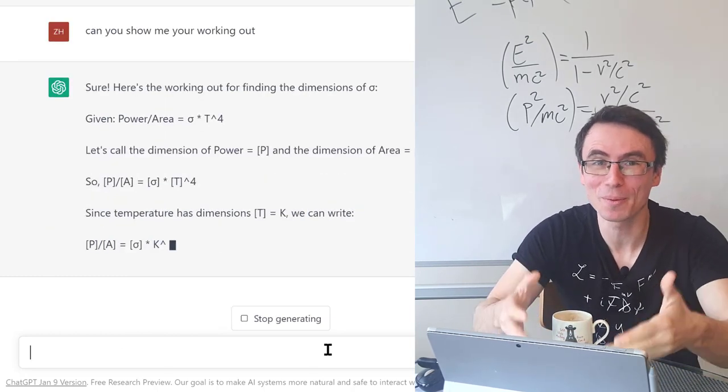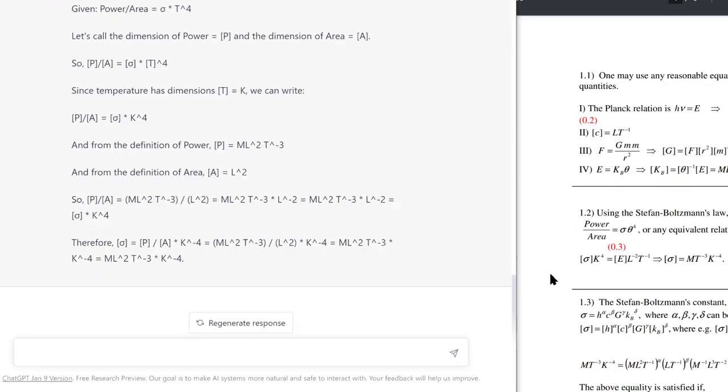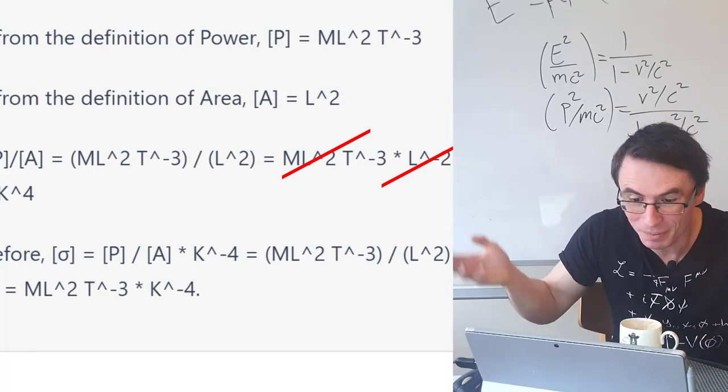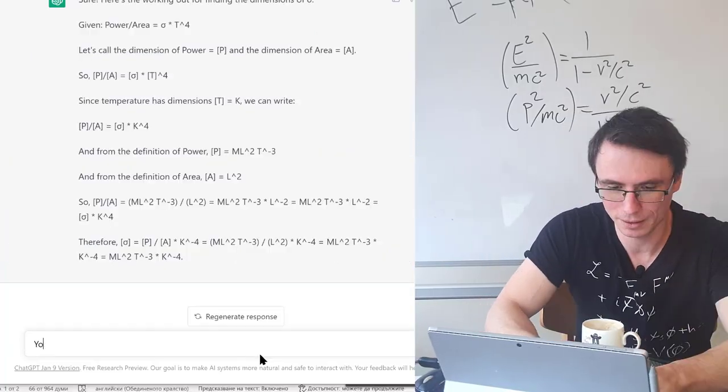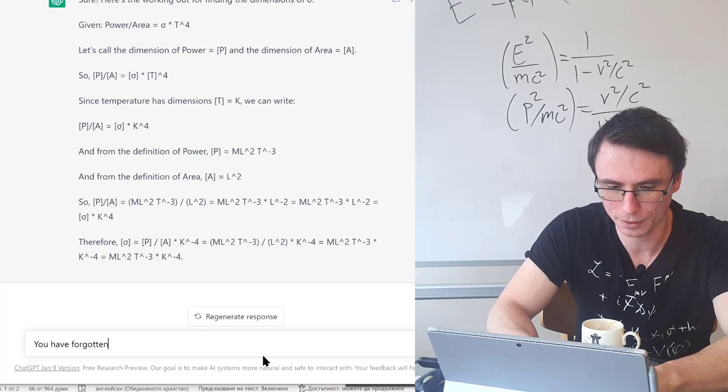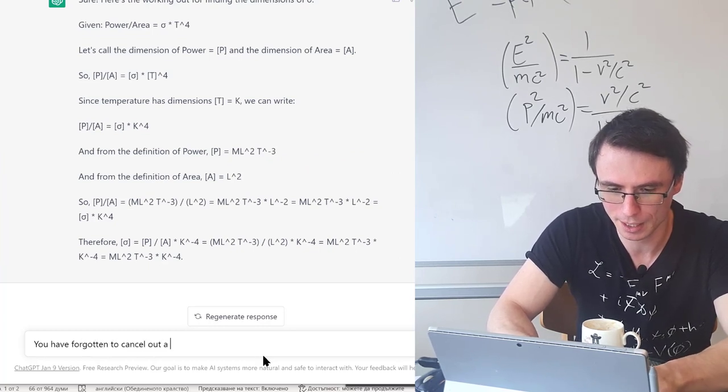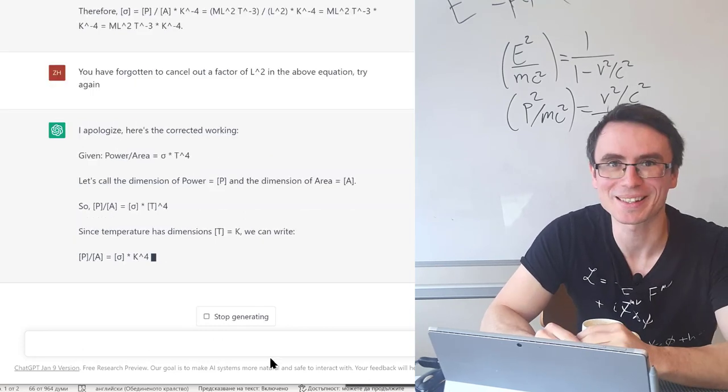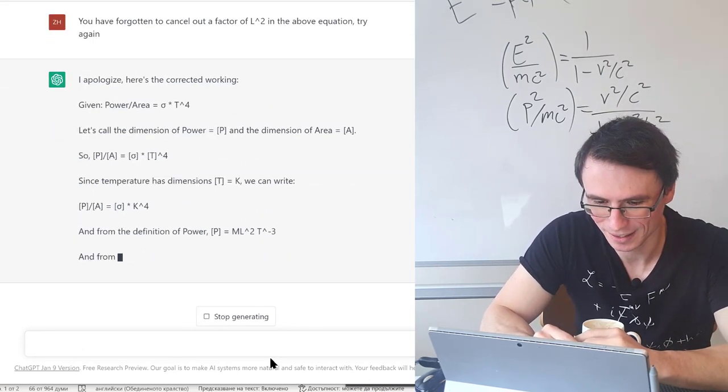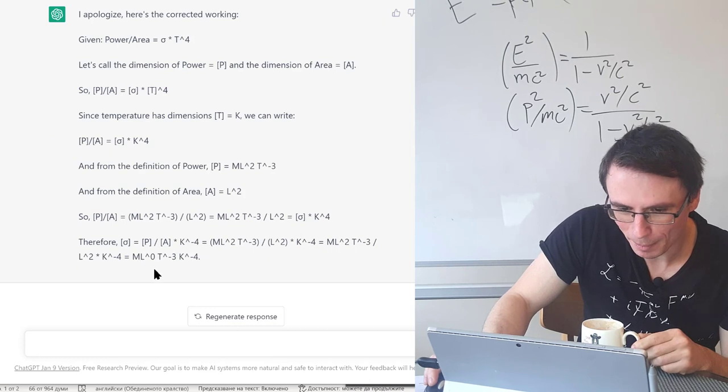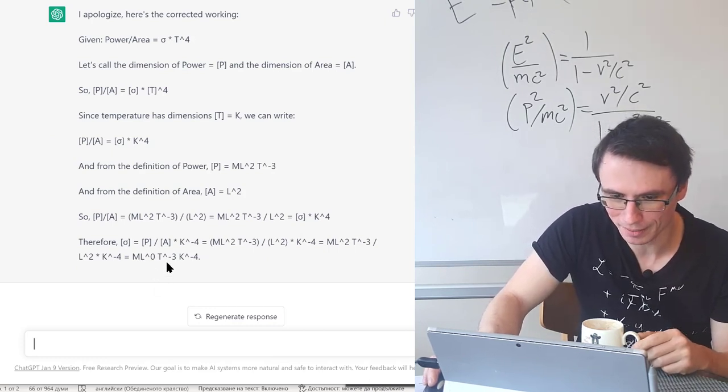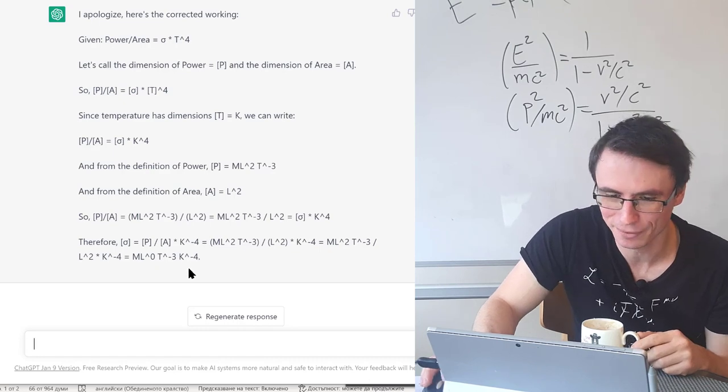It's funny, I'm actually feeling like I'm almost teaching a real person here. And look at this, it's forgotten to cancel a factor of L squared just like a real person sometimes. You have forgotten to cancel out a factor of L squared. So let's see its corrections. Giving us M multiplied by L to the 0, which is 1. That's correct. T to the negative 3, K to the negative 4. That is absolutely correct.